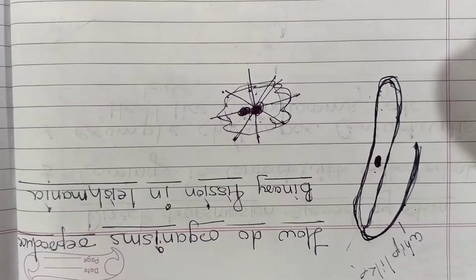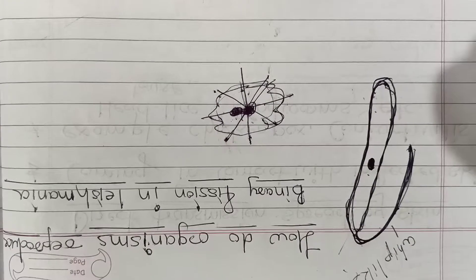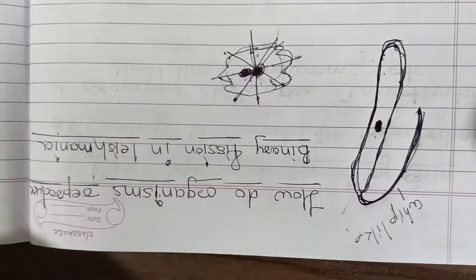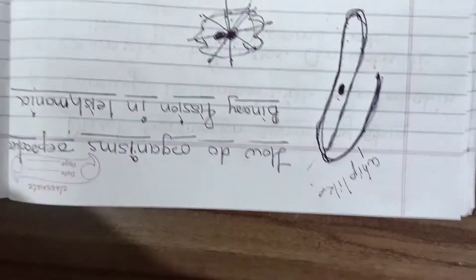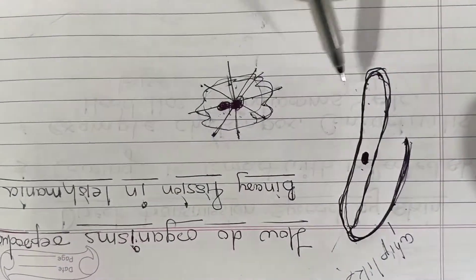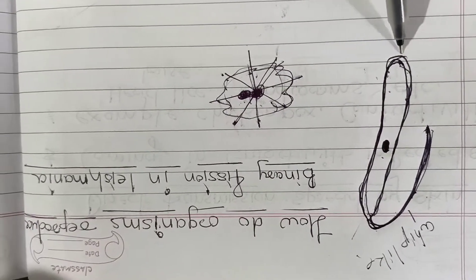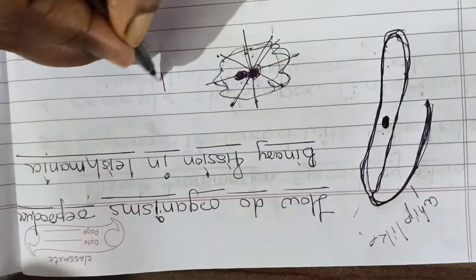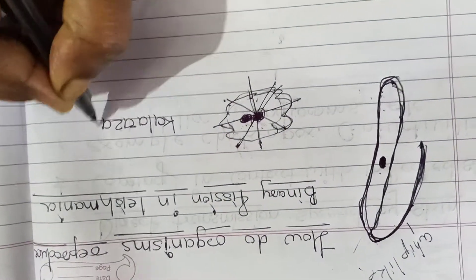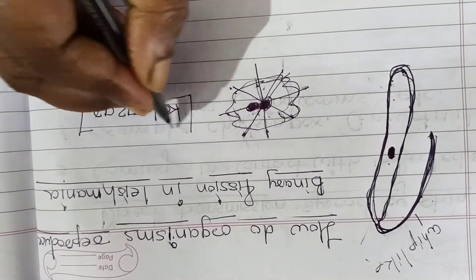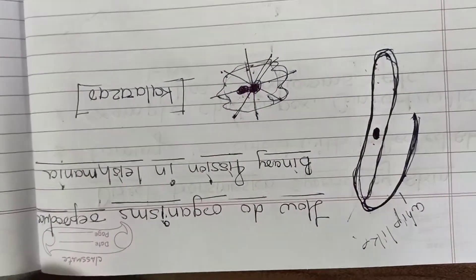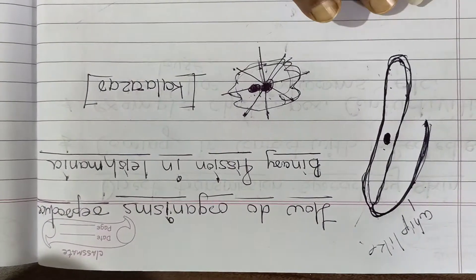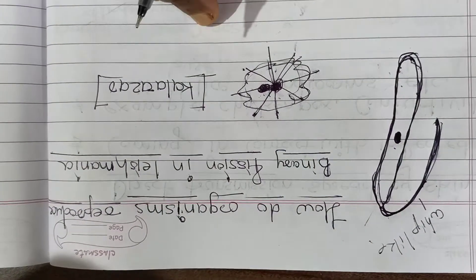Students, in the class 10 exam this question is always asked: what is the difference between binary fission in amoeba and binary fission in Leishmania? It is asked for 2 to 3 marks, so properly write the answer. Also keep in mind that Leishmania is a parasite which causes Kala Azar — a kind of fever.